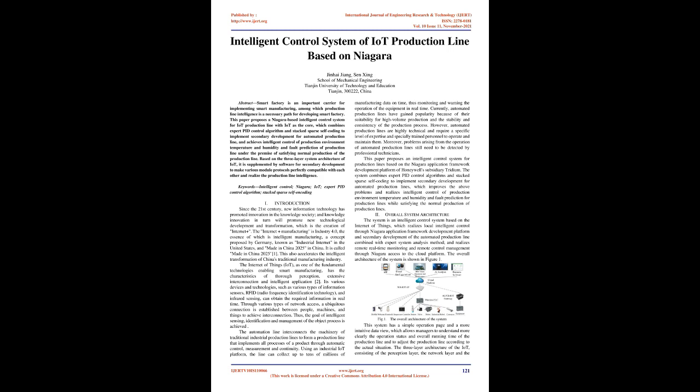Using an industrial IoT platform, the line can collect up to tens of millions of manufacturing data on time, thus monitoring and warning the operation of the equipment in real time. Currently, automated production lines have gained popularity because of their suitability for high-volume production and the stability and consistency of the production process. However, automated production lines are highly technical and require a specific level of expertise and specially trained personnel to operate and maintain them. Moreover, problems arising from the operation of automated production lines still need to be detected by professional technicians.